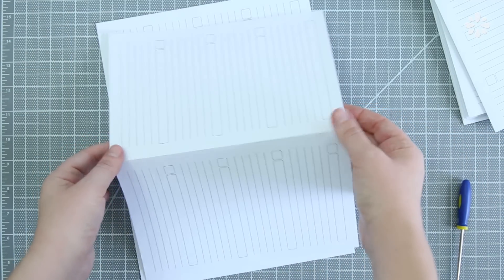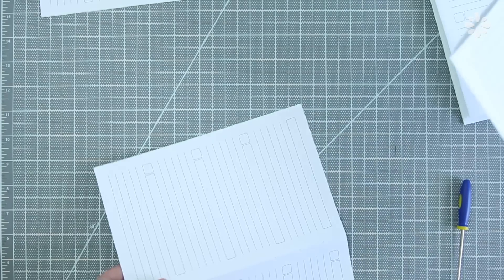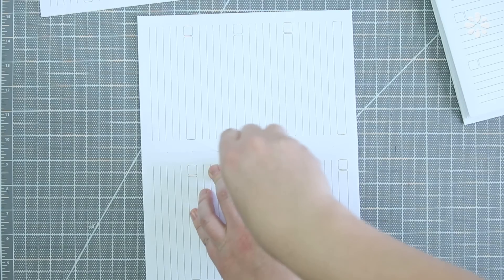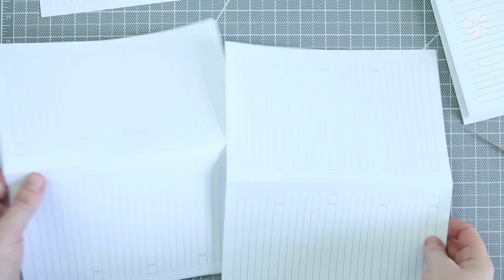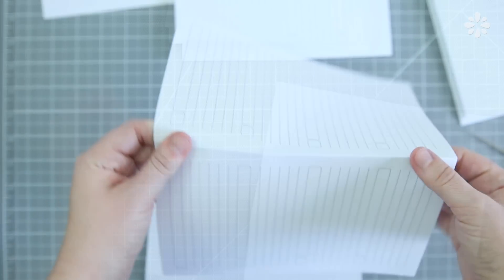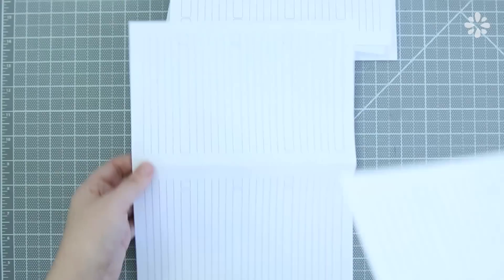Then take off the top page, and that will be the template for the rest of the signatures. So unfold your next signature, and place that one on top, and just pierce through the marks. Continue that on the rest of your signatures. And when you're done, make sure to put that page back onto the signature it came from.